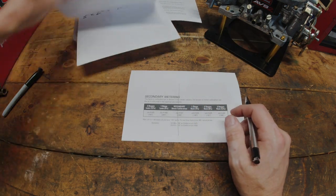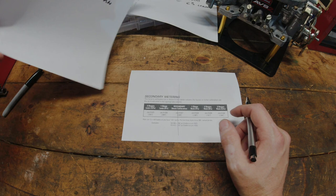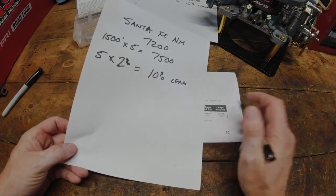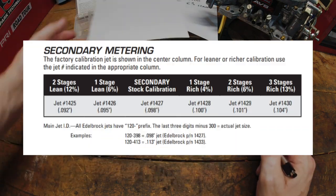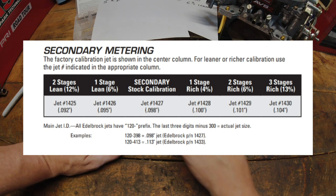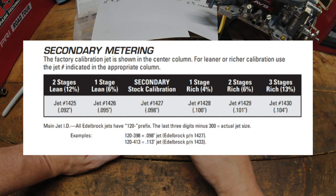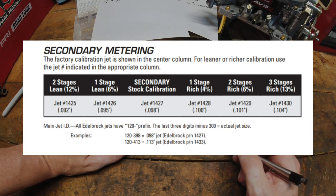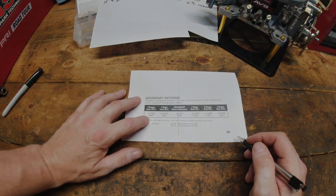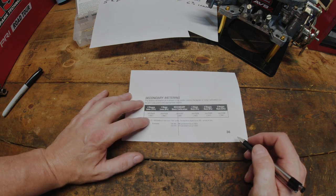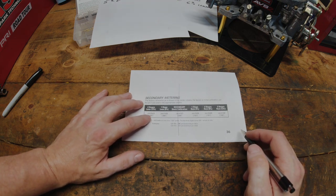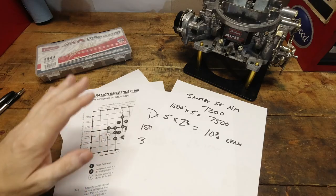When we go to Denver, and it says we needed to be, or excuse me, go to Santa Fe, and we had to be 10% lean, this is 12%. Again, that small a percentage, I don't know that I would fight that too much. I would go ahead and put in that 12% or two-stages lean jet, and it will be just fine for the secondary side of it.